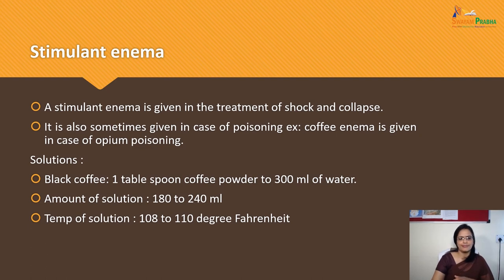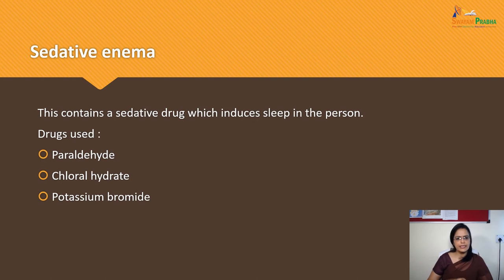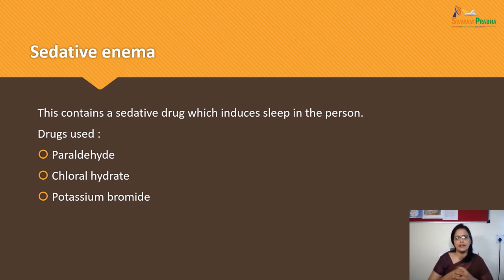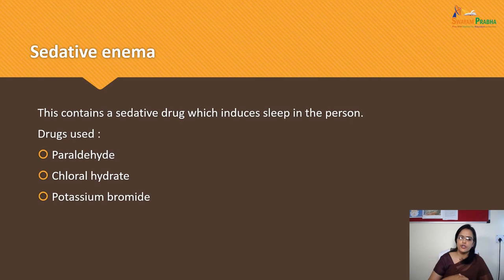Sedative Enema is used to induce sleep. The drugs used include paraldehyde, chloral hydrate, and potassium bromide, as prescribed by the doctor.